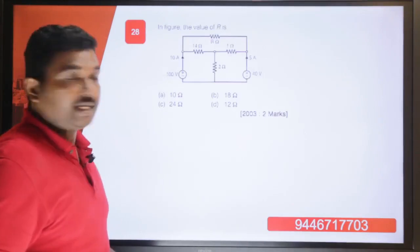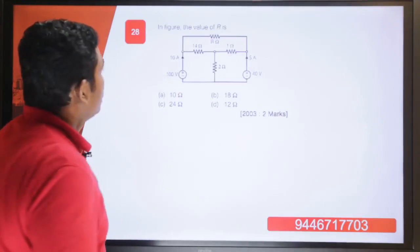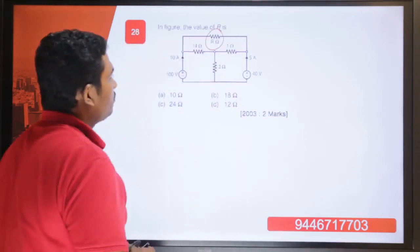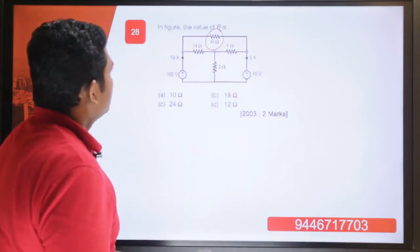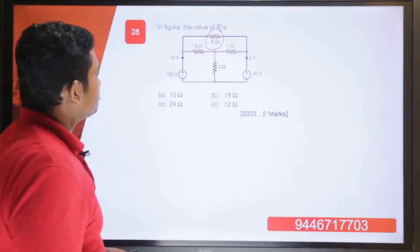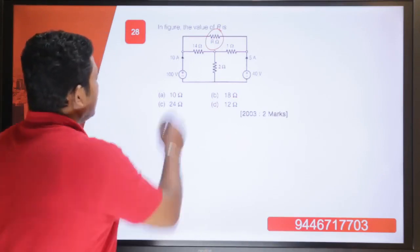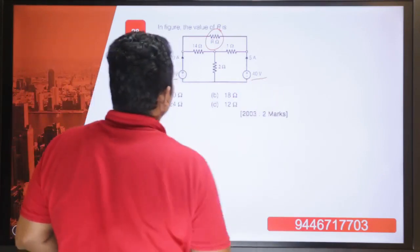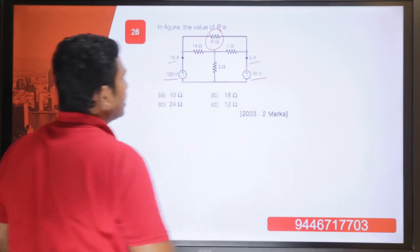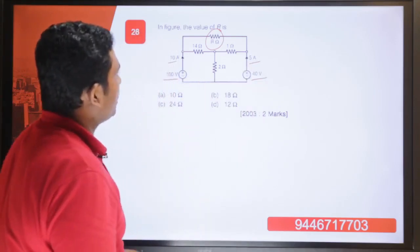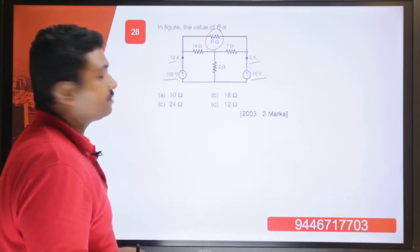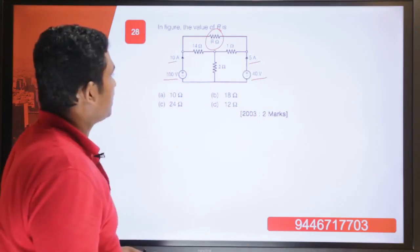Moving to question 28: find the value of R. There is a 100 volt source, a 40 volt source, a 10 ampere current, a 5 ampere current, and resistors of 14 ohm, 1 ohm, and 2 ohms. We have to find the value of resistance R.